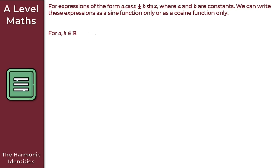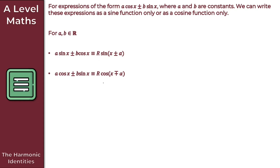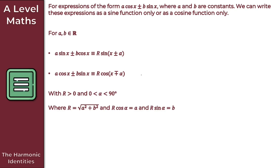For a and b belonging to the set of real numbers: a·sin(x) ± b·cos(x) is identical to r·sin(x ± α), and a·cos(x) ± b·sin(x) is identical to r·cos(x ∓ α). Here r is always strictly greater than 0, and α is always between 0 and 90 degrees (or 0 and π/2 in radians). r equals the square root of a² + b², with r·cos(α) = a and r·sin(α) = b.